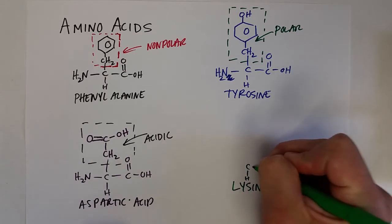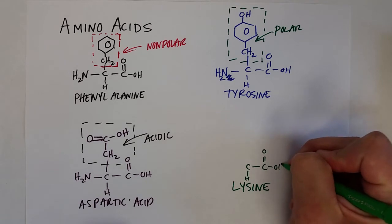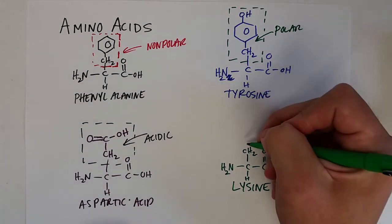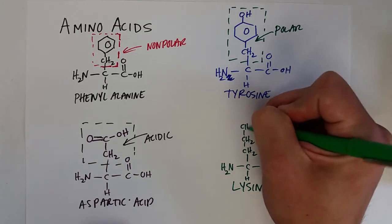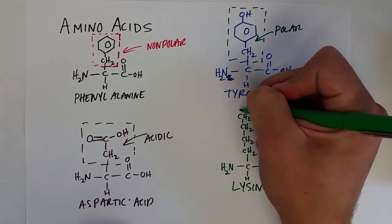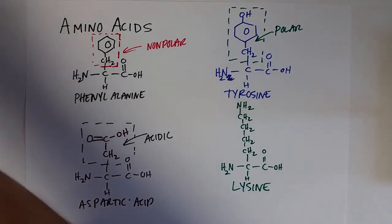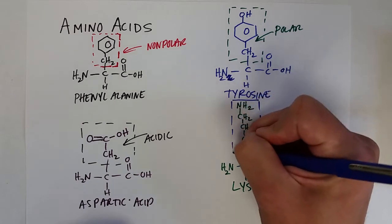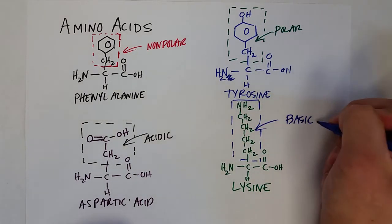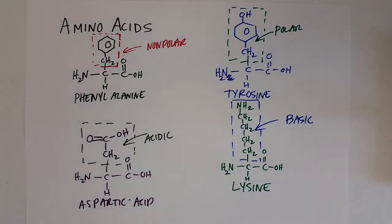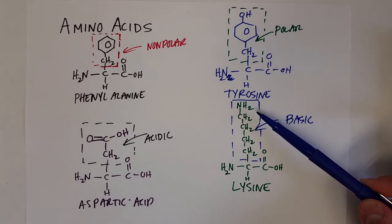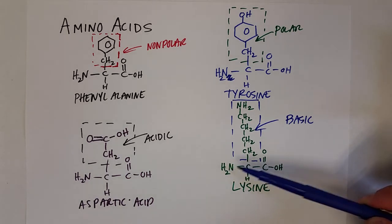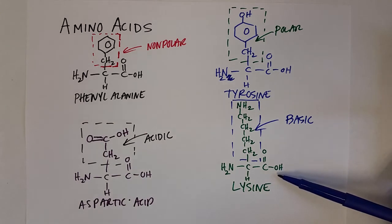You can also have basic side groups. One of those is lysine. The basic amino acids all have an amine on their R group, because an amine can act like a base — it can accept protons. Lysine has four CH2 groups and then an amine at the end. That amine causes it to act like a base, so it is classified as a basic amino acid.